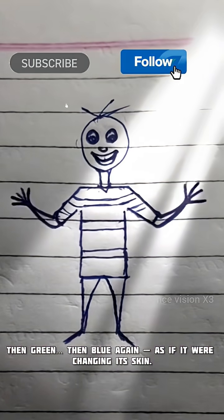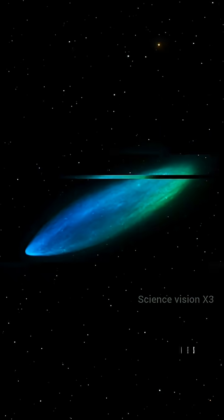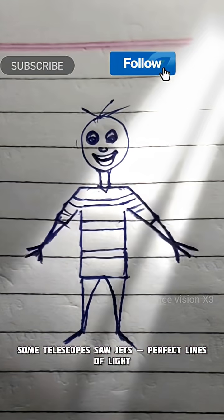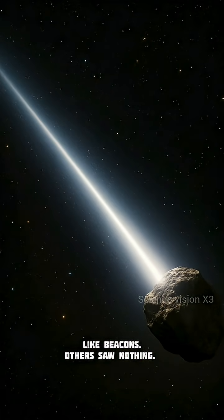Instead, it shimmered blue, then green, then blue again. As if it were changing its skin, some telescopes saw jets, perfect lines of light stretching millions of kilometers, like beacons. Others saw nothing.